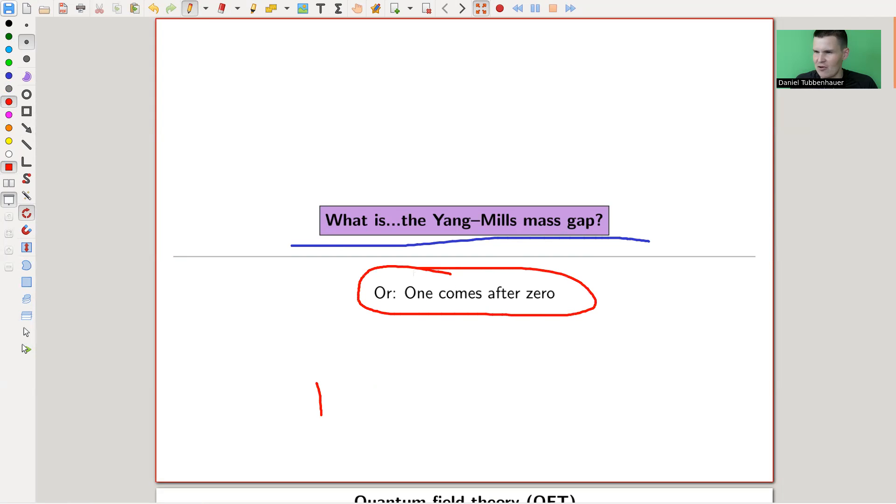And yeah, we'll see what it actually means. Essentially, it means that everything is kind of discrete. It's really just zero comes after one, and there is nothing like a half or something. That's what it is. It's usually what people call quantization. Quantization is completely overused. But in this context, it means that everything comes in discrete packages.